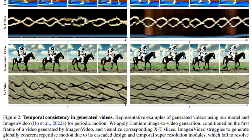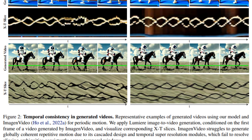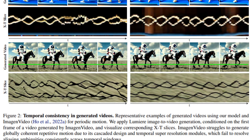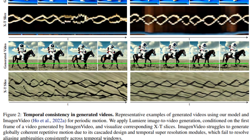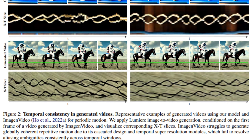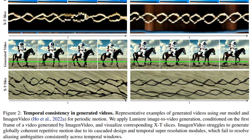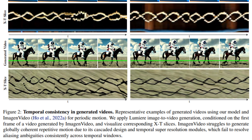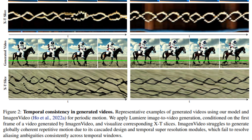Imogen Video, while good, sometimes doesn't connect all its images as smoothly, which can make the video look choppy or less natural. Overall, Lumiere's text-to-video model showed promising results in creating high-quality, motion-rich videos that align well with text prompts, outperforming several existing models in user studies. This represents a major advancement in AI's text-to-video capabilities.